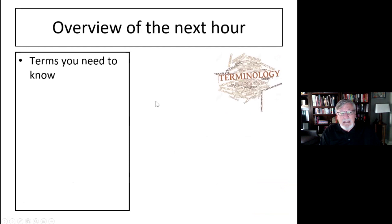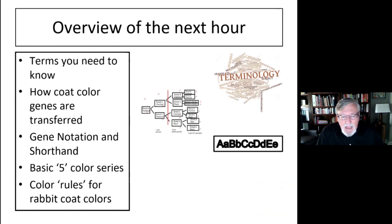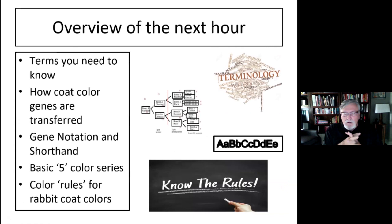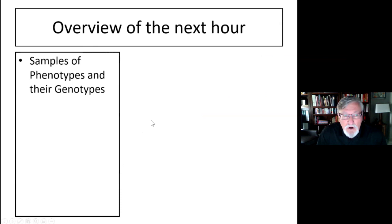We're going to overview the next hour, starting with terms you might need to know when talking about rabbit coat color. We're going to talk about how genes are transferred, about gene notation and shorthand, the basic five color series, and then the color rules for rabbit coat colors. I hope this fits in with what you're looking for, and I'm hoping that you will end up in the next hour being much more knowledgeable.